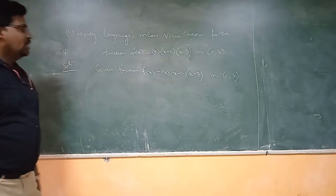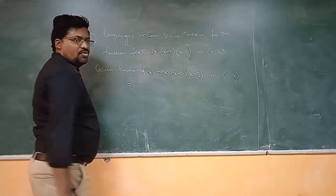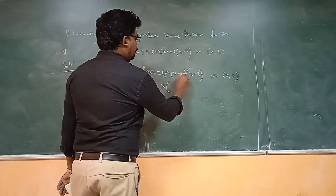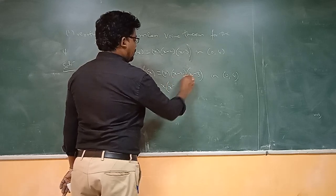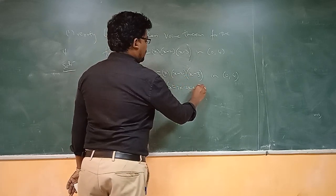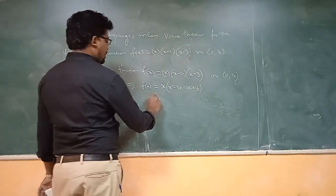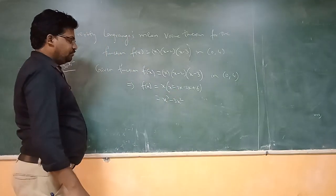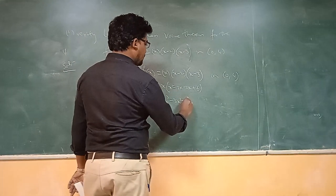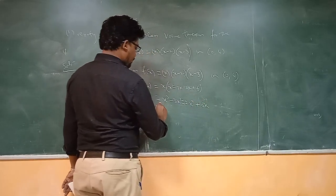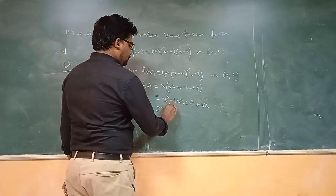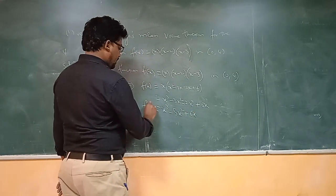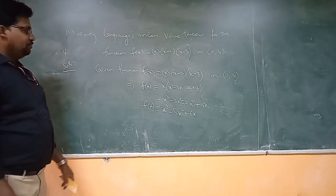Expanding: x times (x²− 3x − 2x + 6), this implies x cubed minus 3x squared minus 2x squared plus 6x, so f(x) equals x³ − 5x² + 6x. This is the function we have.